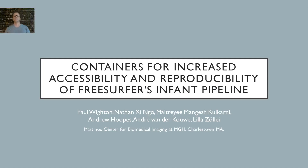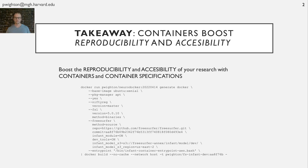Hello everyone. This is a story about how we use containers and a thriving open-source neuroimaging community to increase the accessibility and reproducibility of a neuroimaging pipeline. But the takeaway is this: publishing a concise description of your computational environment, similar to the one seen here, is probably one of the best things you can do to increase the reproducibility of your work. And descriptions like this one are concise enough to fit into the appendix of most publications.